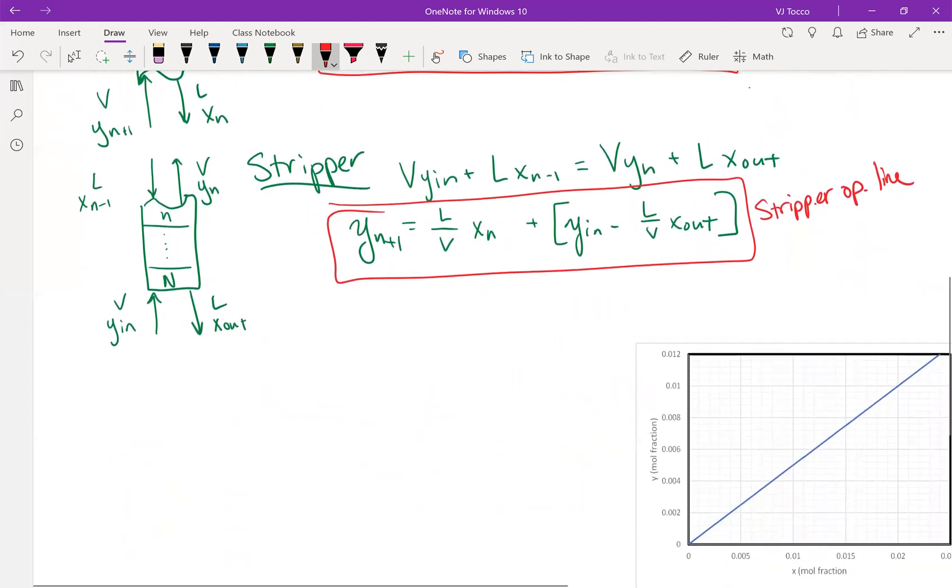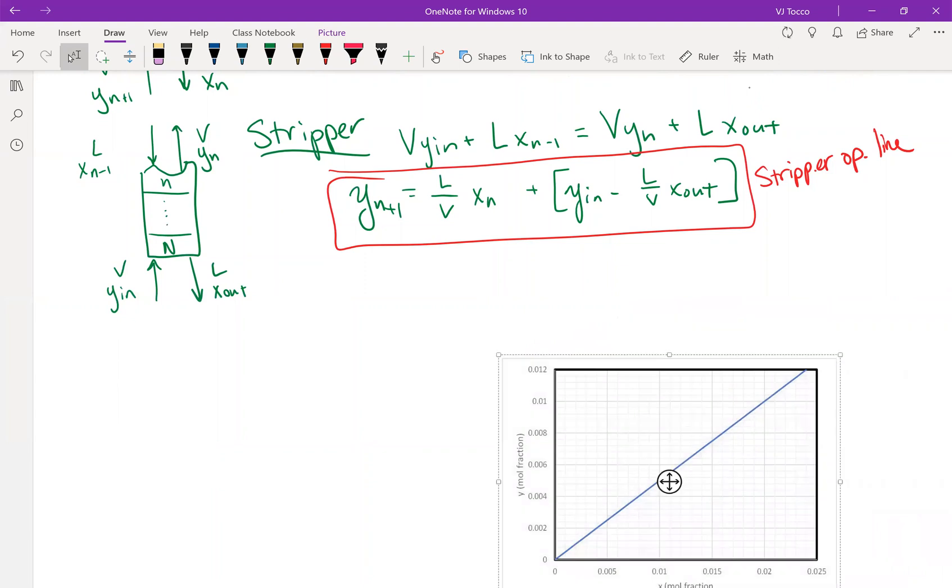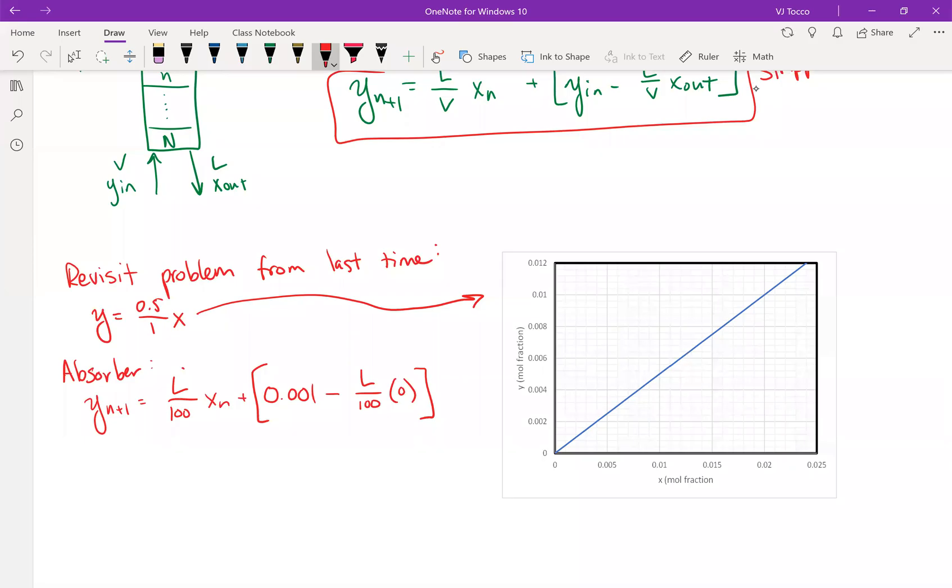So let's revisit the problem that we had from last time. I've already graphed the equilibrium data. So I've just copied over the information from last time. I have the equilibrium data. Remember the Henry's law constant for this problem was 0.5 and the pressure was one atmosphere. So this is what this line is. This equation for this line is literally y is equal to 0.5 times x.